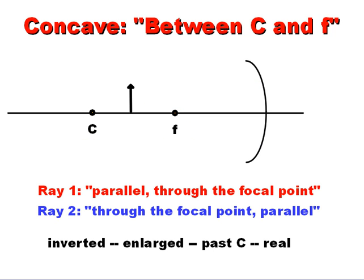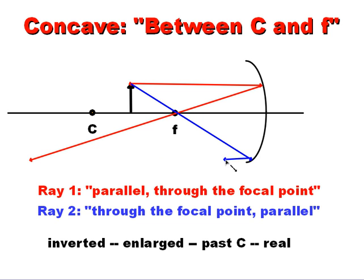Why don't we take a look at the next one? What if we put the image, or the object between C and F? Well, now we're going to notice a little difference, although it's pretty much the same. Parallel through the focal point, and the blue one goes through the focal point first, and then runs parallel.